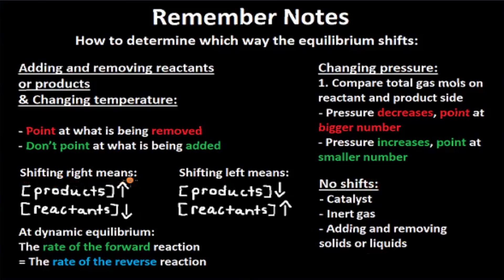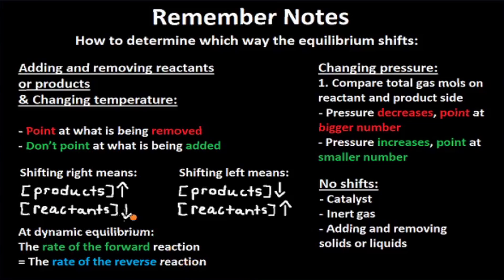Shifting right means product concentration increases and reactant concentration decreases — a shift right points at the product side. Shifting left means product concentration decreases and reactant concentration increases — a shift left points at the reactants. At dynamic equilibrium, the rate of the forward reaction is equal to the rate of the reverse reaction. This is something you may need to know.